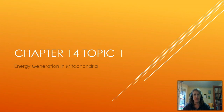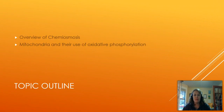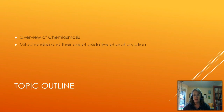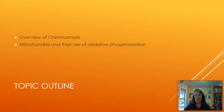Make sure that you have a good handle on all three of those. In this topic, we're going to do an overview of chemiosmosis, and then we're going to talk about mitochondria and how they use oxidative phosphorylation to generate energy for the cell. We've got a lot to talk about. Most of this should be fairly new, but we're going to add a new layer of detail that you haven't seen before in some of your other classes.